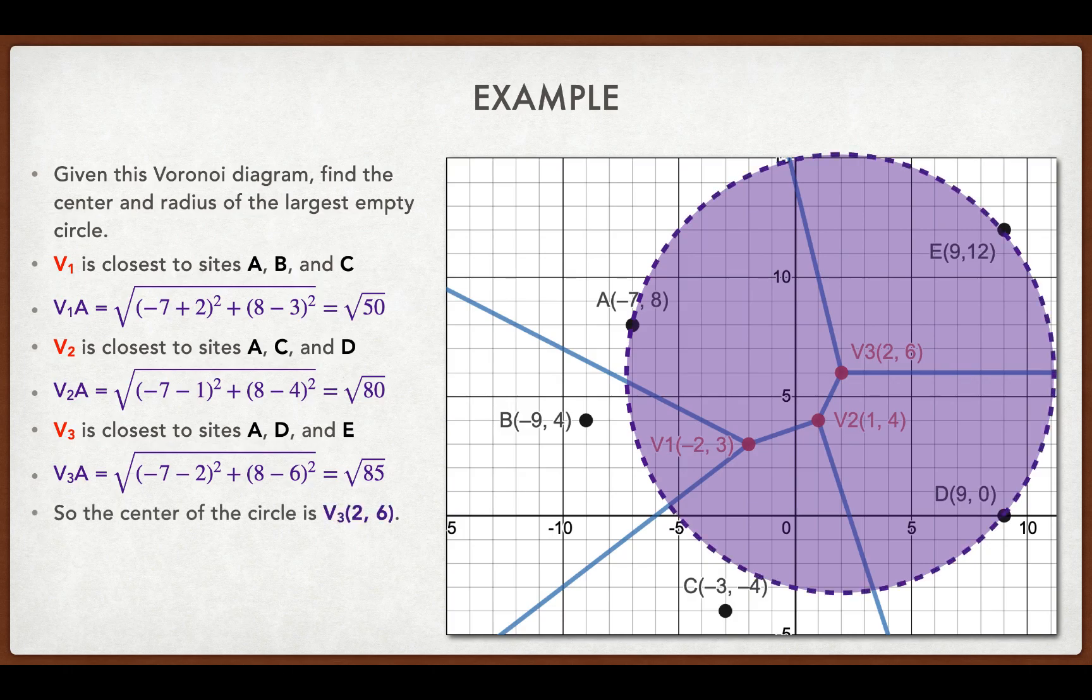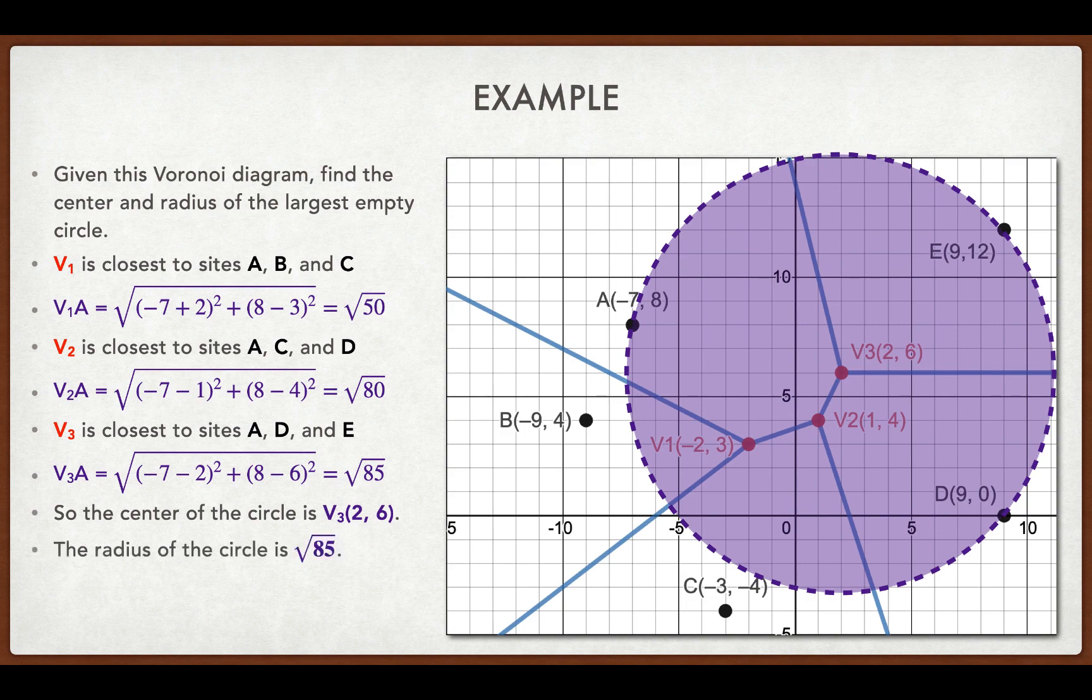So the center of the circle is going to be at vertex 3, which has coordinates 2 and 6. And the radius of that circle, the distance to the nearest town, is going to be the square root of 85, which is just a little higher than 9.